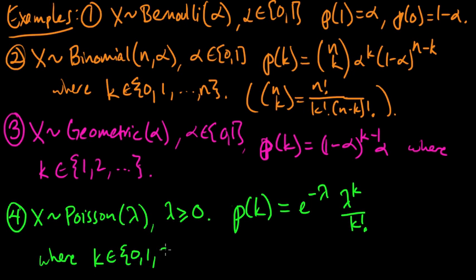So those are just a few examples of commonly occurring discrete random variables.